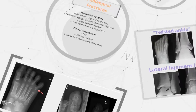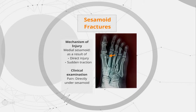Sesamoid fractures are generally uncommon. The mechanism of injury is either direct injury — for example, landing from a height onto the ball of the foot — or sudden traction, such as chronic repetitive stress seen in dancers or runners. An example case involved a patient with a history of a road traffic accident, with fractures seen in the shaft of the second, third, and fourth metatarsal bones, along with a transverse fracture of the sesamoid bone adjacent to the first metatarsal.